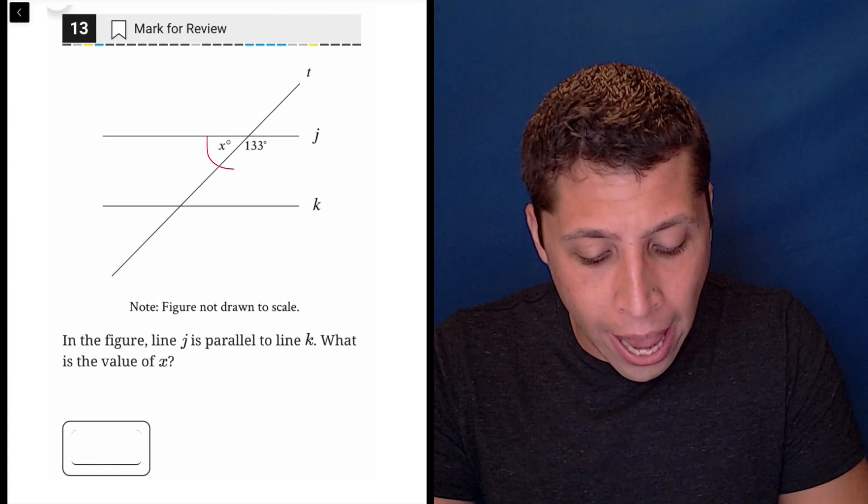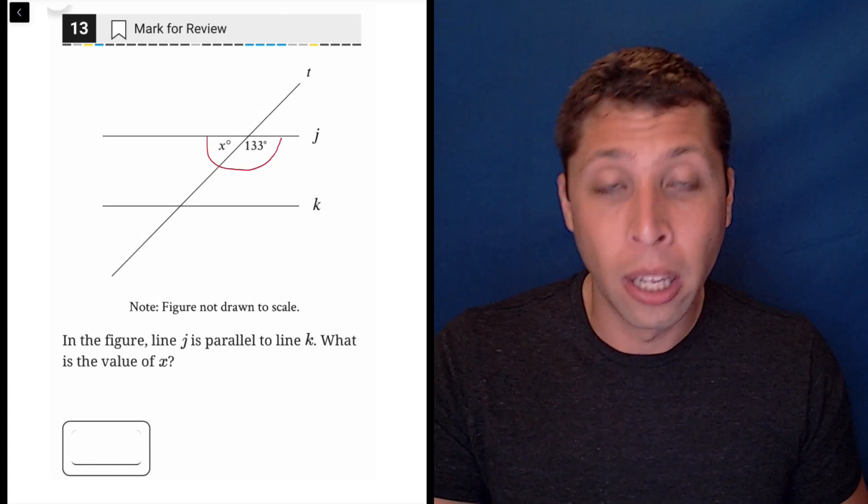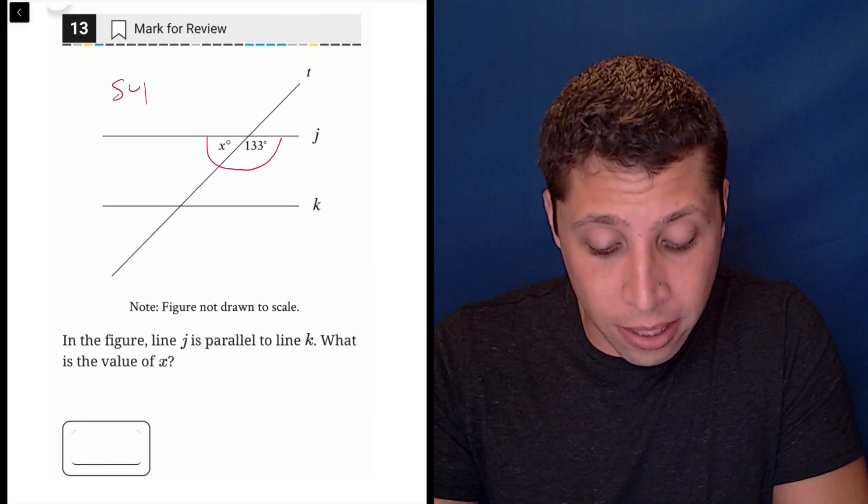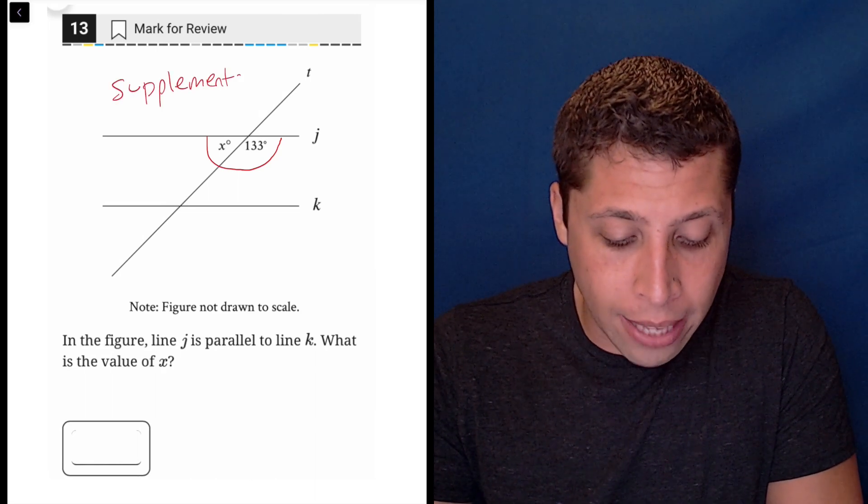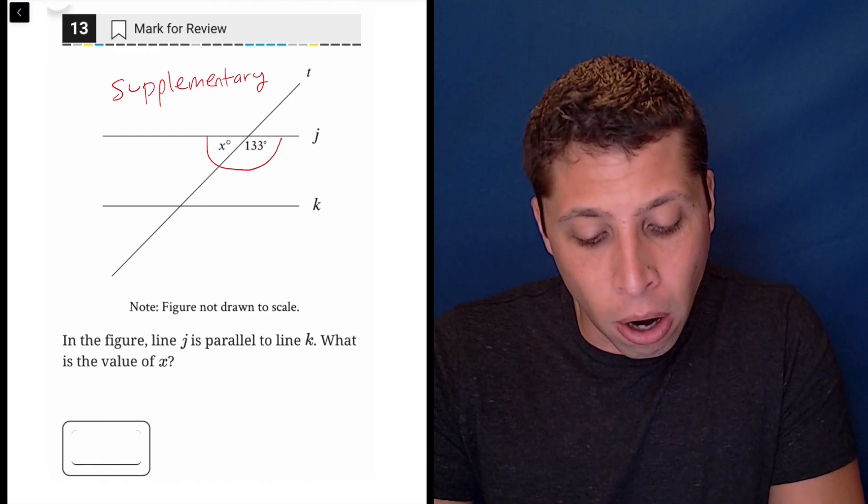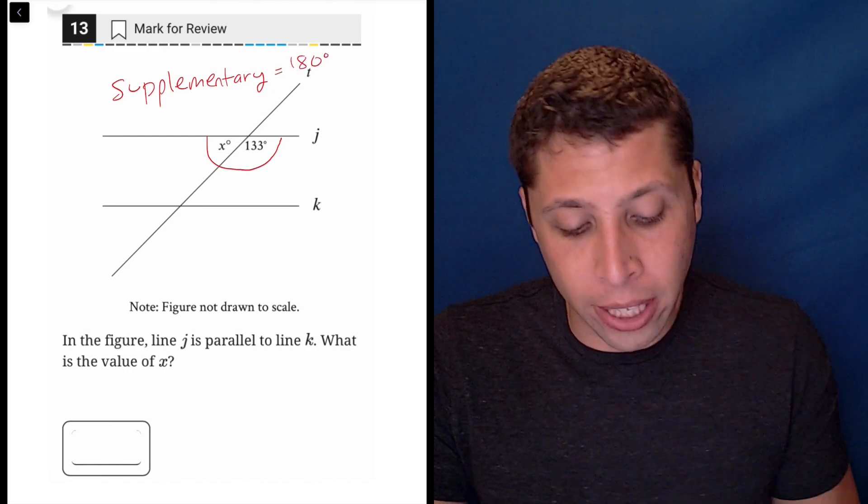Basically these two angles together make half a circle, so that would be supplementary angles, and supplementary angles are going to add up to 180 degrees.